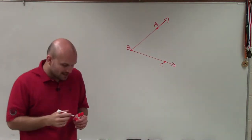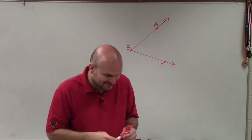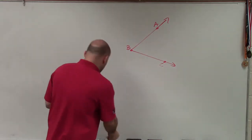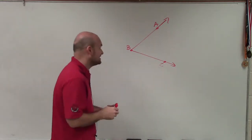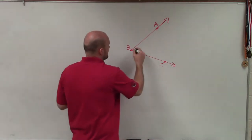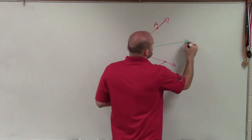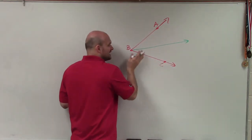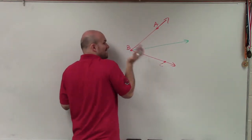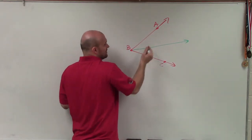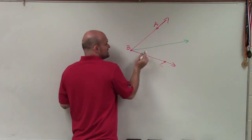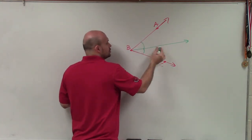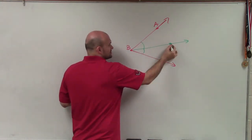When we have an angle and we have a line that is on the interior of the angle — so it's a ray — when we have a ray that cuts an angle basically in half, it pretty much takes the angle and now makes two congruent angles.